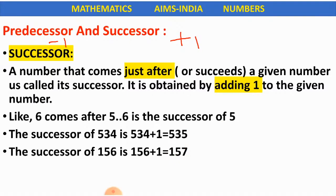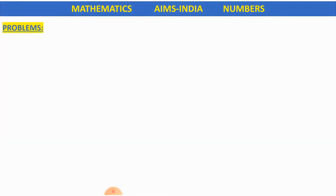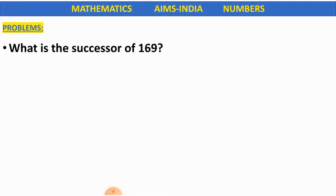Remember — predecessor means the number which comes before a given number, obtained by subtracting 1. Success always comes after doing something, so successor is the number which comes after a given number, obtained by adding 1. Let us solve some problems now.